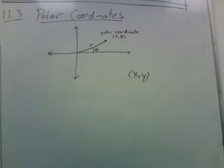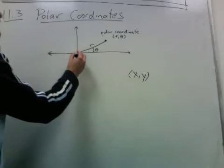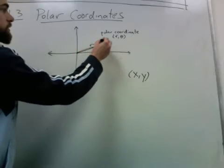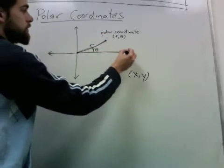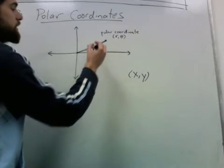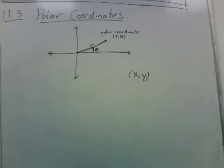But there's also a way to describe points just in terms of their distance from the origin, which we call r, and their angle from the x-axis, which we call theta. So if we know the distance from the origin and their angle from the x-axis, we know exactly where the point is.